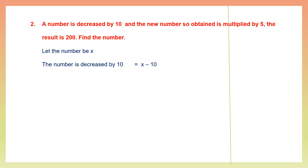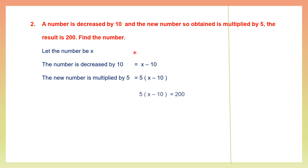The number is x. We decrease it by 10, so x minus 10. The new number that you get is x minus 10. If it is multiplied by 5, you get 5 into x minus 10. The new number is multiplied by 5 and the result is 200, so 5 into x minus 10 is 200.